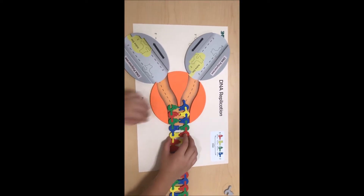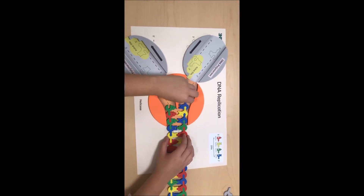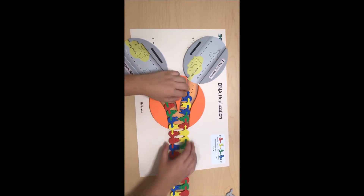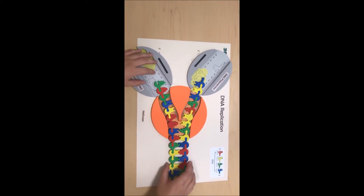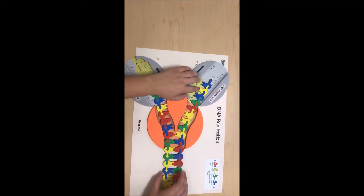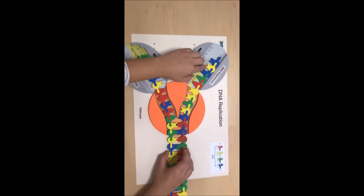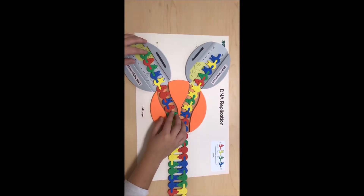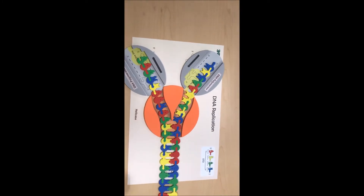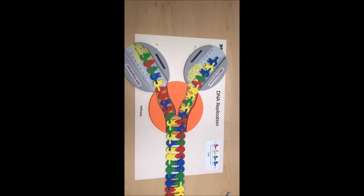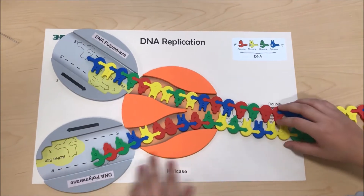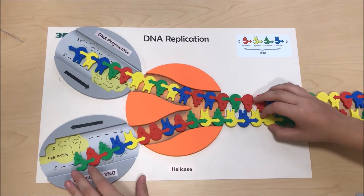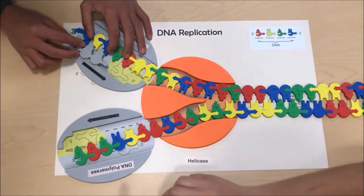DNA has an anti-parallel directionality, meaning the nucleic acid sequences go in opposite directions. In other words, one strand runs in the 3' to 5' direction and the other strand runs in the 5' to 3' direction.